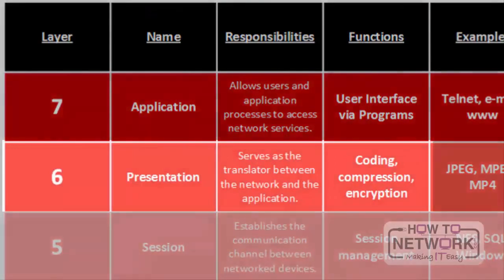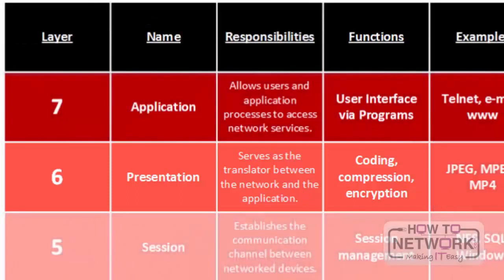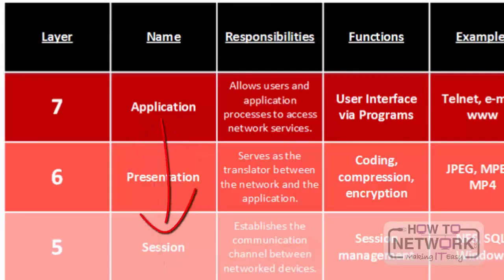Next is the presentation layer. This layer provides independence from differences in data representation — such as encryption — by translating from application to the network format and vice versa. It's the intermediary between the application and the lower layers of the OSI model. This layer works to transform data into a form that the application layer can accept, and also formats and encrypts data to be sent across the network, providing freedom from compatibility issues.